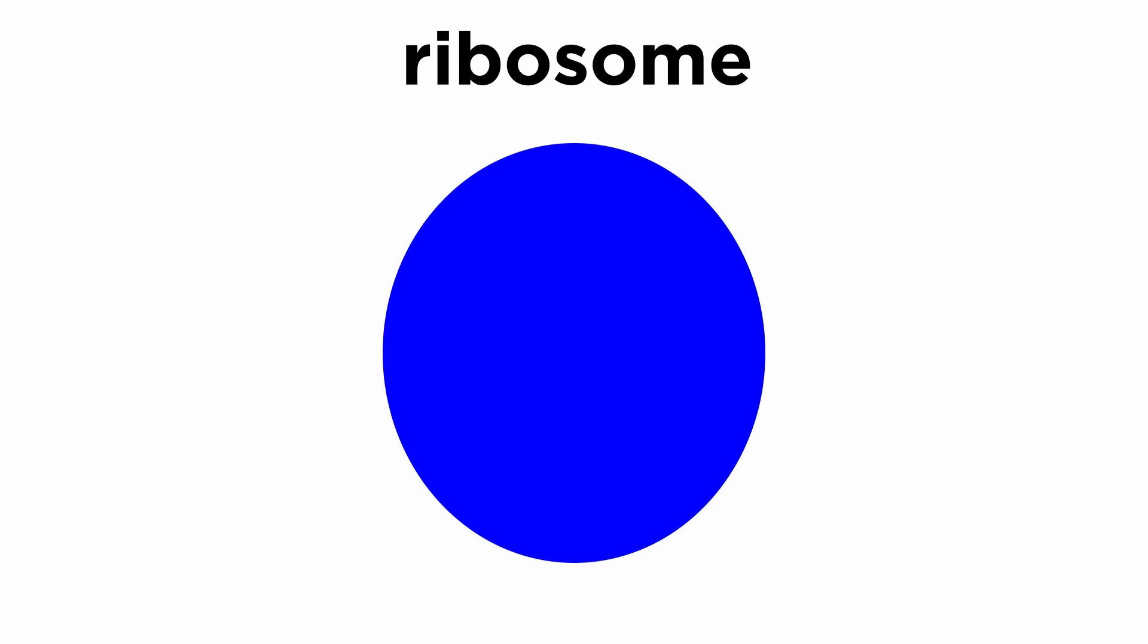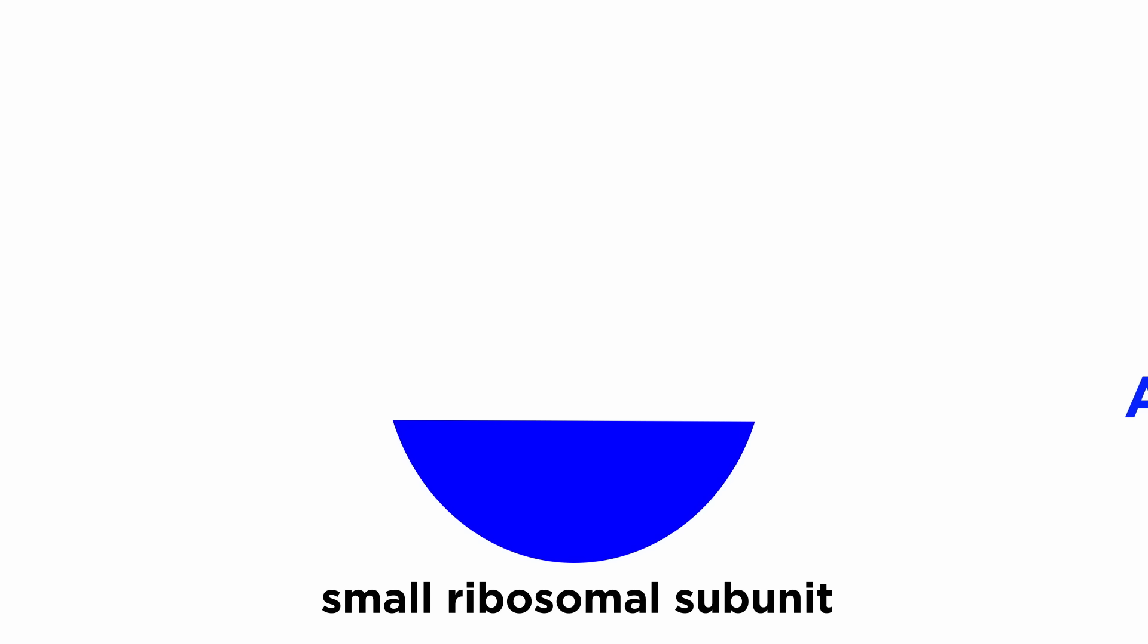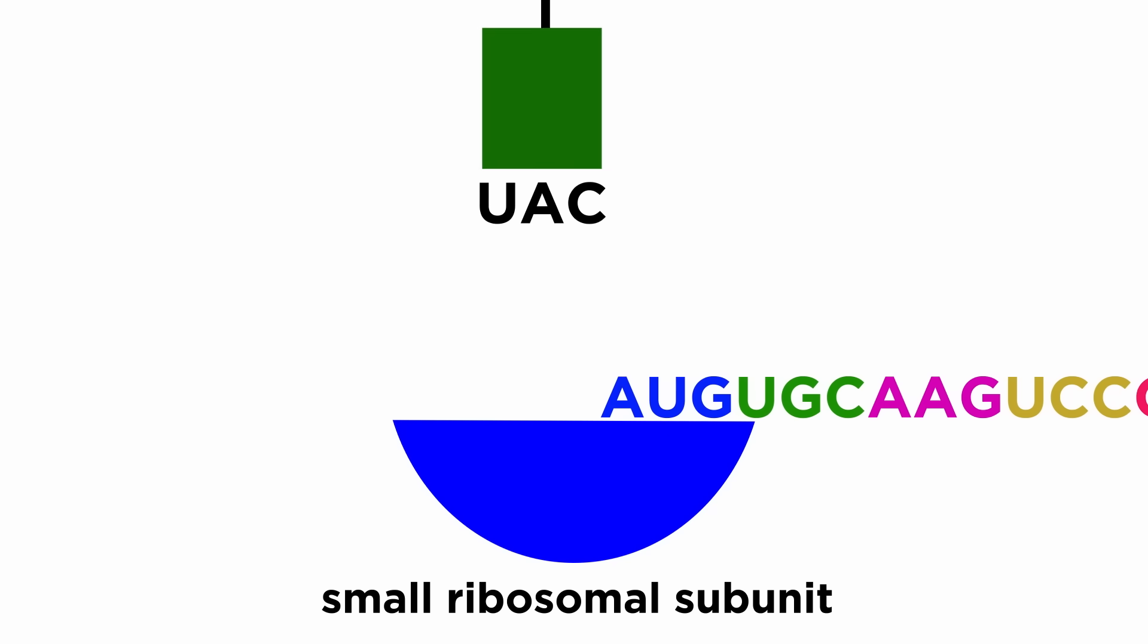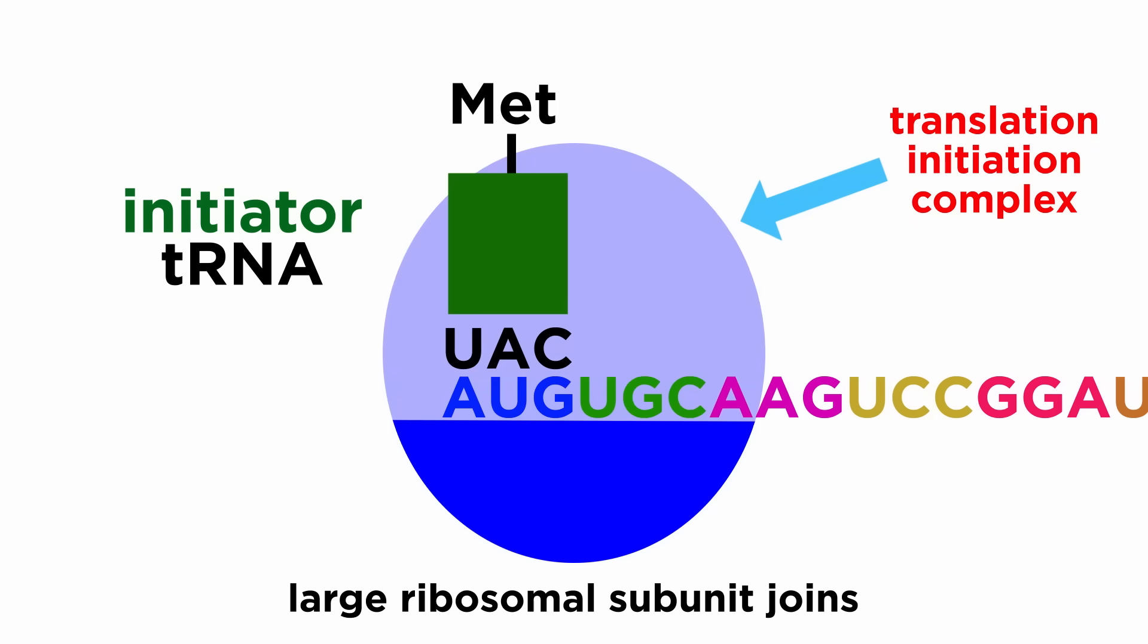Translation will occur inside a ribosome. The small ribosomal subunit binds to an mRNA and an initiator tRNA, which adheres to the start codon. Then the large ribosomal subunit joins to complete the translation initiation complex.